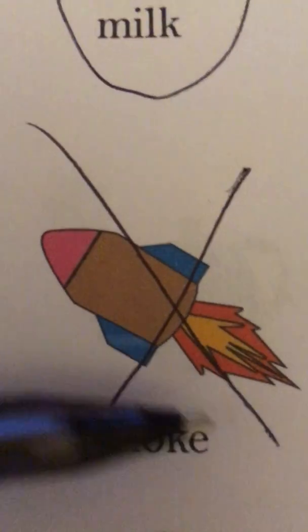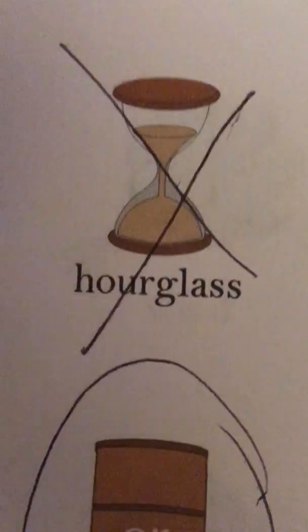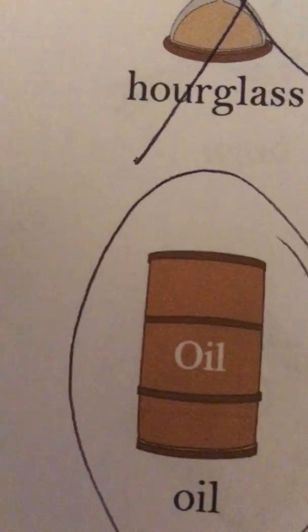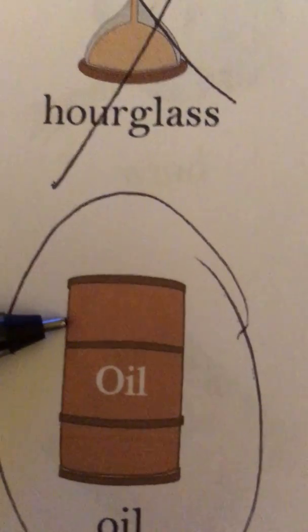Smoke from the rocket is not a liquid, so we put an X on it. Oil is a liquid, so we put a circle around it.